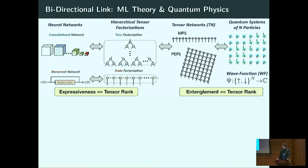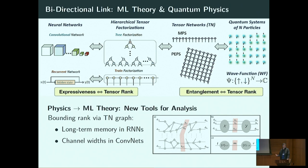About two years ago we realized that this formalism for analyzing neural networks is actually very similar to the formalism physicists use to describe quantum systems. Physicists use graphical notations for tensor factorizations called tensor networks to design factorizations tailor-made to represent quantum systems — specifically wave functions, which are functions taking a grid of spin particles (up or down) as input and outputting a complex number.